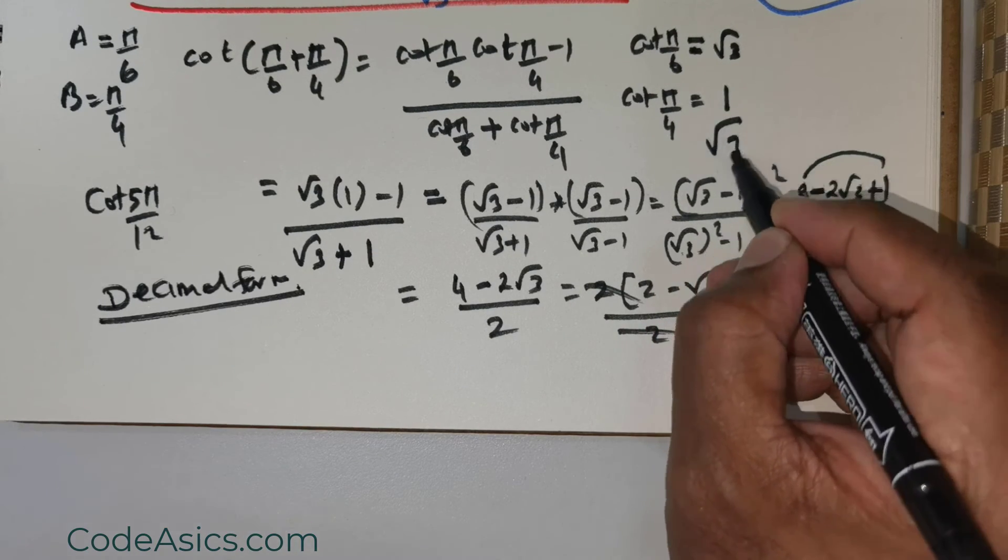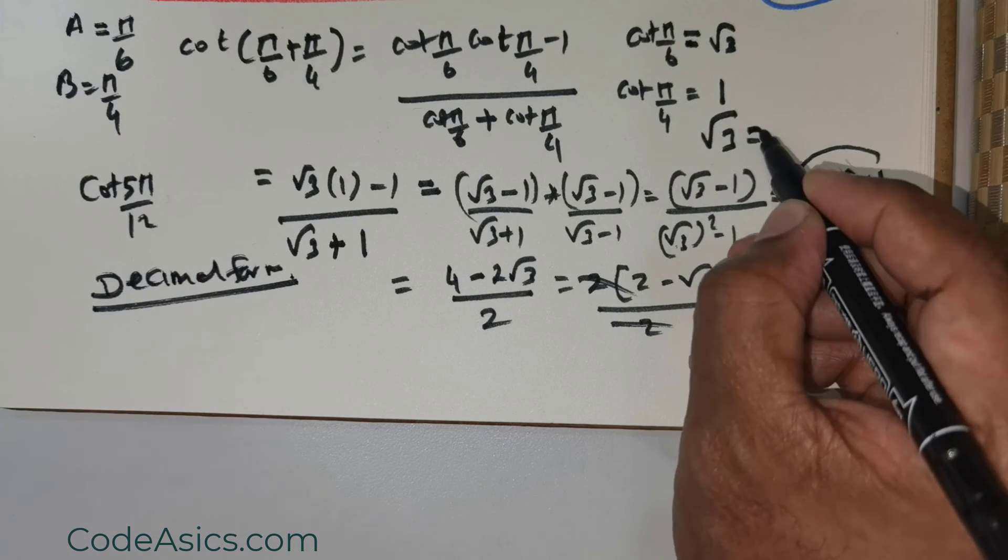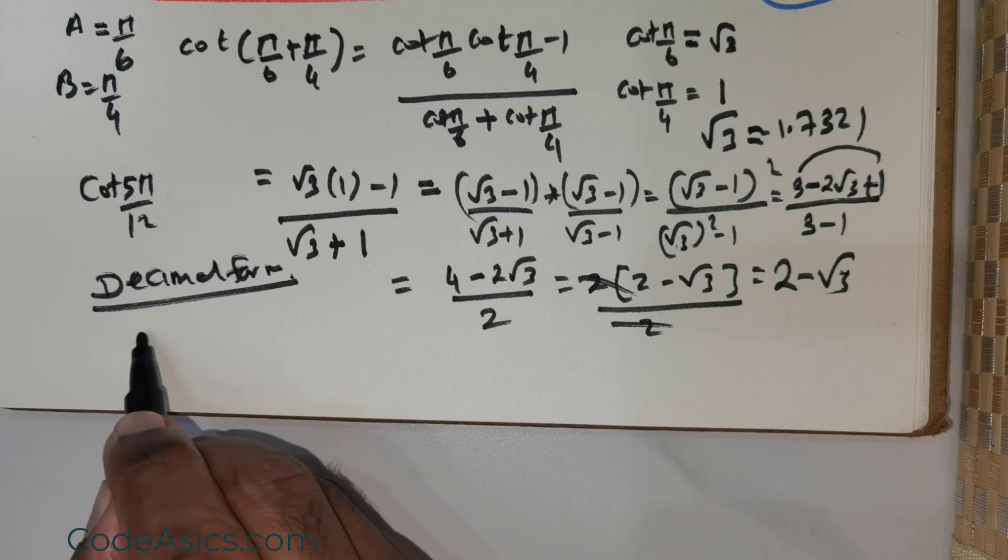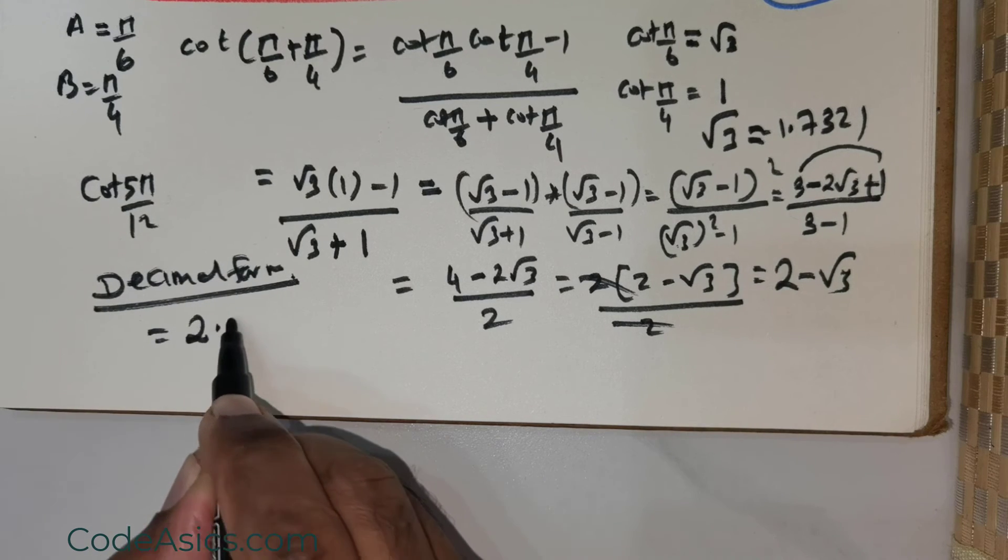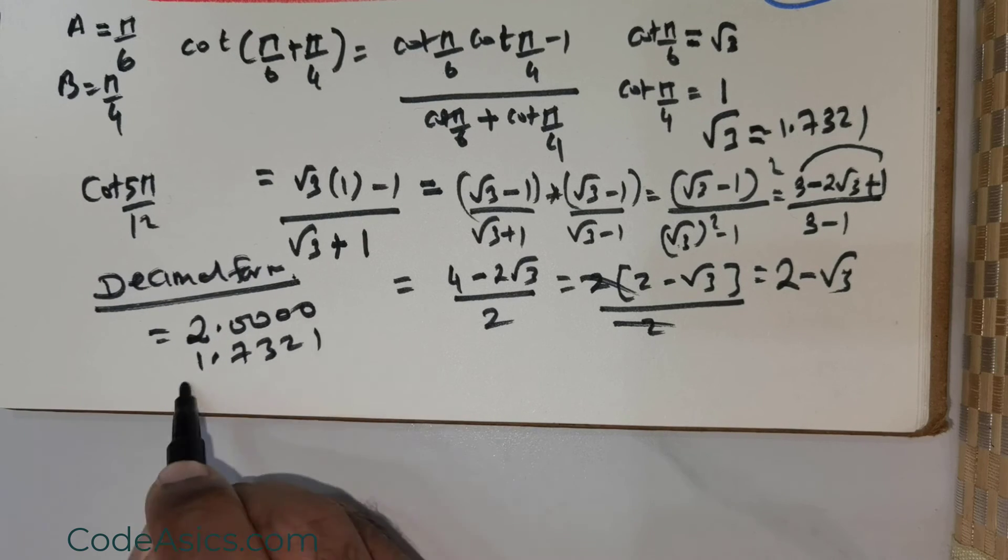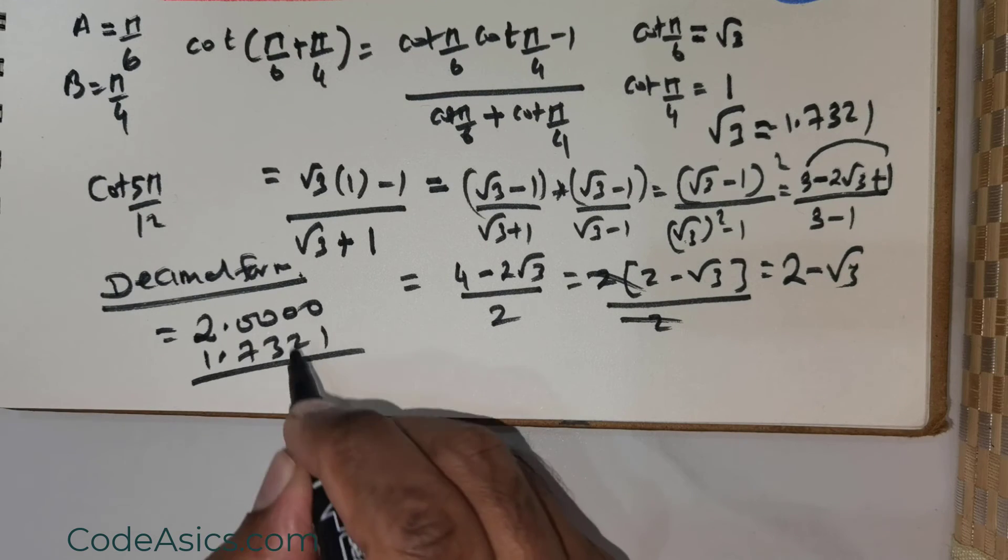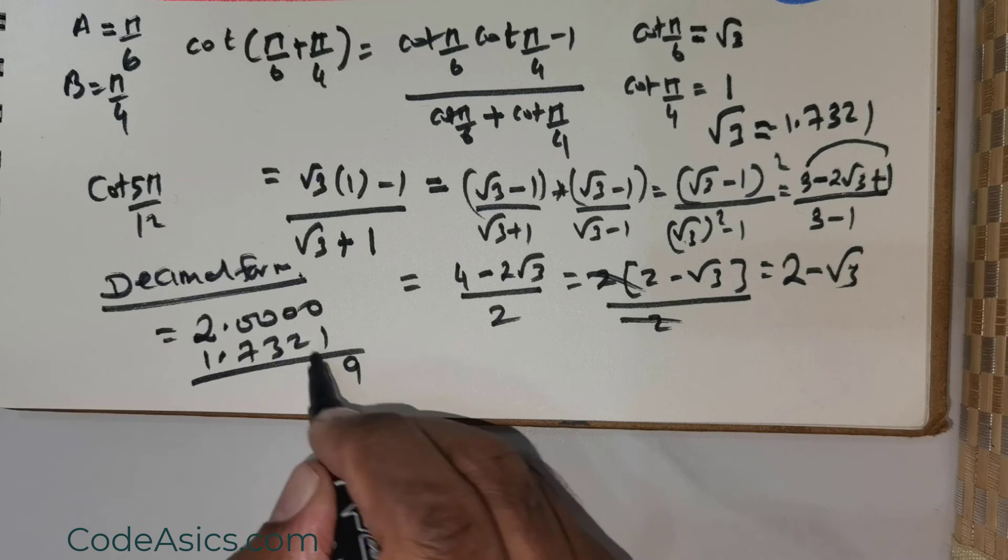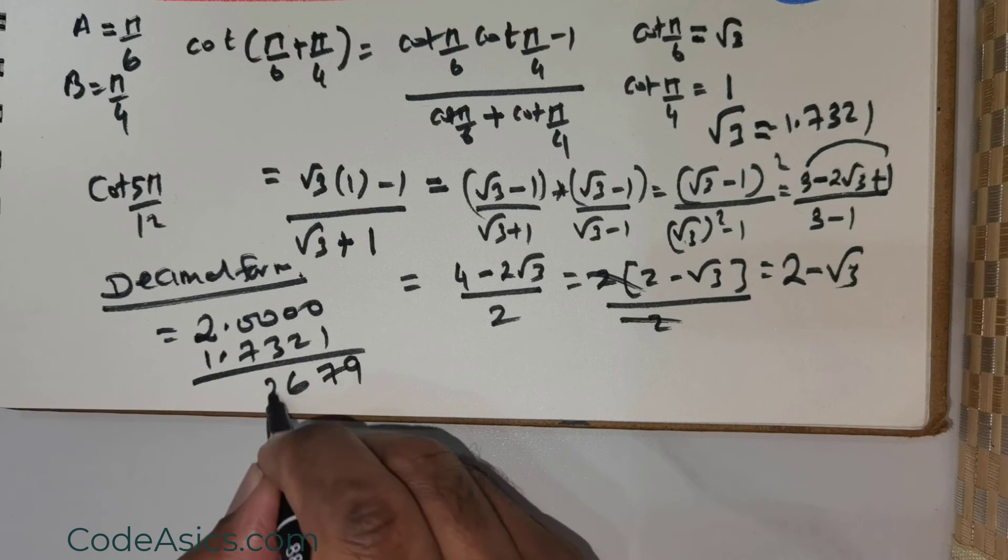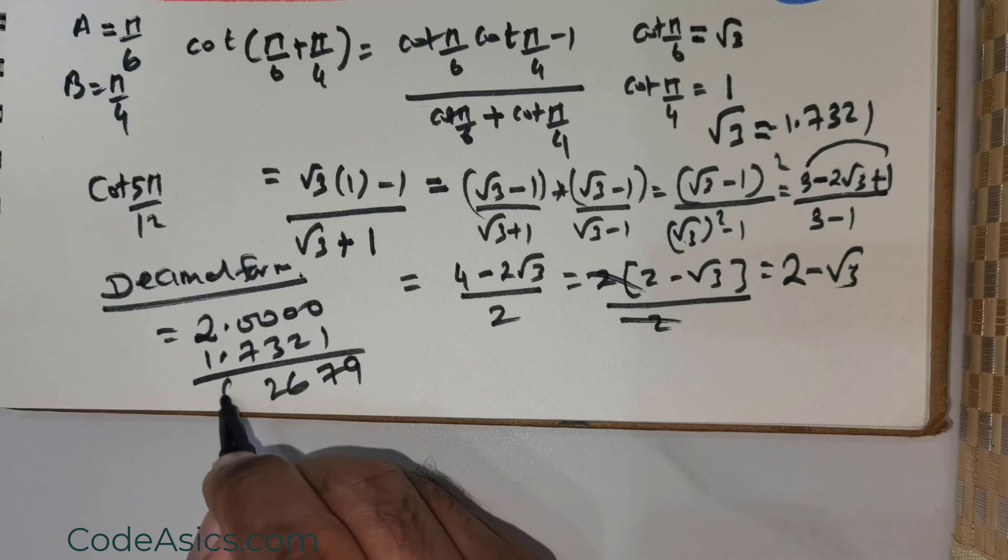So what is √3? Let me write that down. √3 has an approximate value of 1.7321. So if I were to take that value, 2.000 - 1.7321, I subtract both the numbers.